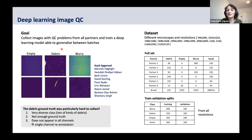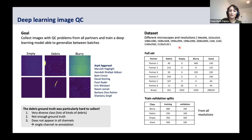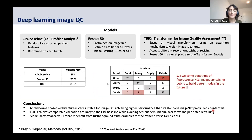We asked all the partners to provide images for an empty class, a debris class, and a blurry class. Here on the right you can see the dataset we collected, which includes different microscopes and a lot of different resolutions. Since the full dataset was very unbalanced, we took a subsample taking care to have a better balance of classes in the train and validation set, and also including images from all resolutions.